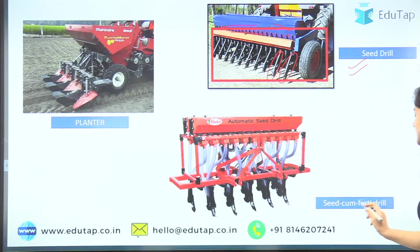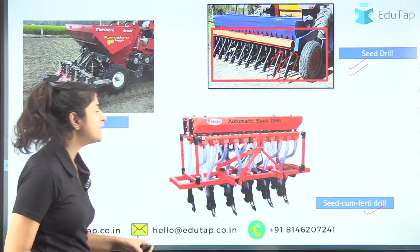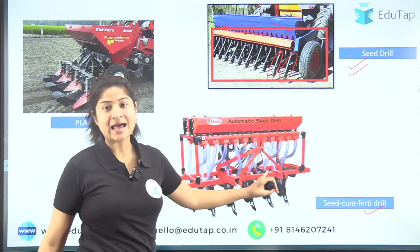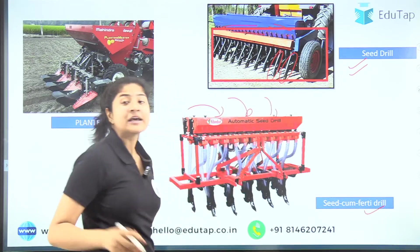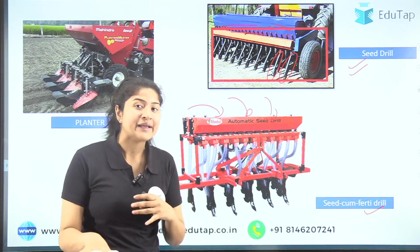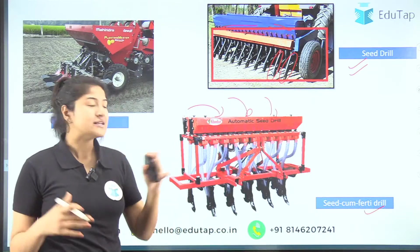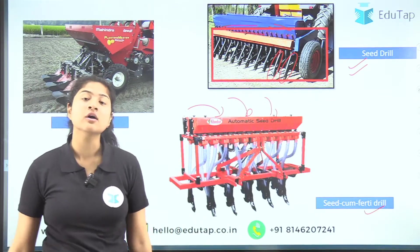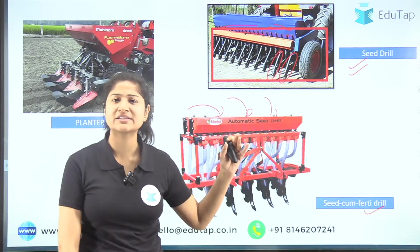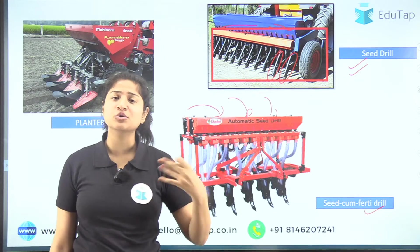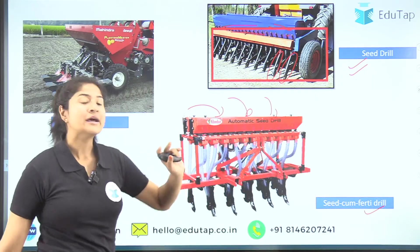There is another category called the seed-cum-fertilizer drill, which is a modification of the seed drill. Along with seeds, fertilizers are also kept so that two operations are done at one time. This is a conservation method as it saves time and helps reduce tillage operations. Excess tillage degrades the quality of soil, so here two tasks are done at one go.